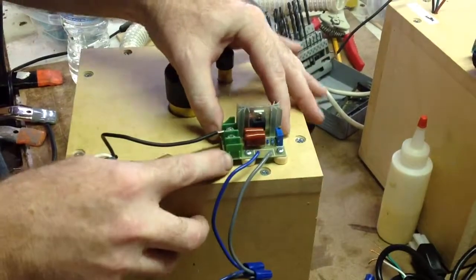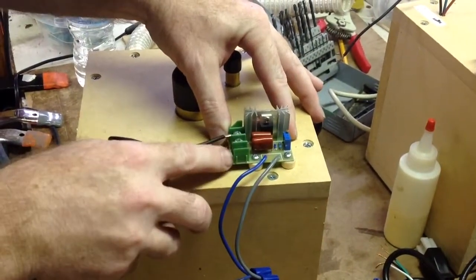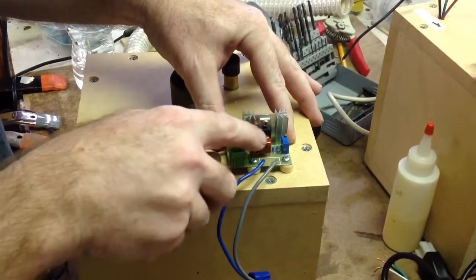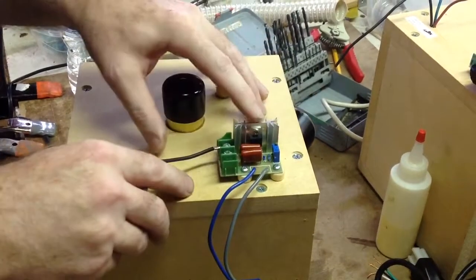This is more than just a light dimmer. This also has a snubber circuit in it, which is a resistor and a capacitor that helps protect the triac.